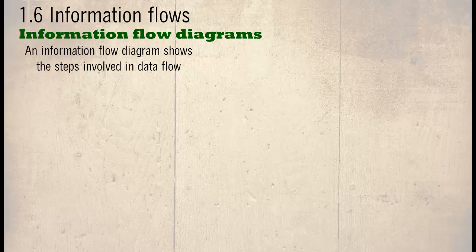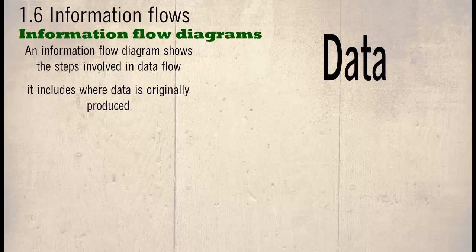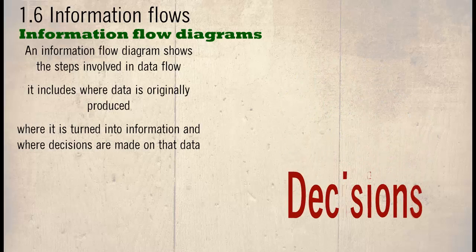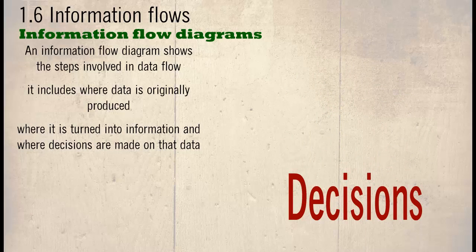An information flow diagram shows the steps involved in data flow. It includes where the data is originally produced, where it is turned into information and where decisions are made on that data.